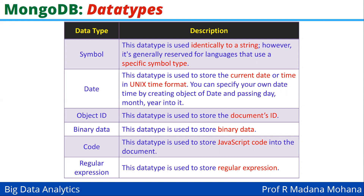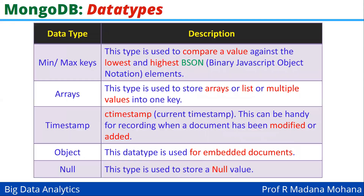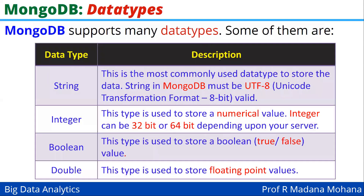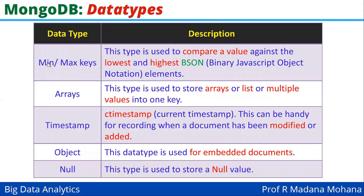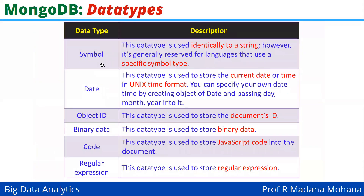These are all some of the data types available in MongoDB. To recap: string, integer, boolean, double, min/max keys, arrays, timestamp, object, null, symbol, date, object ID, binary data, code, and regular expression. These are all the data types used in MongoDB.